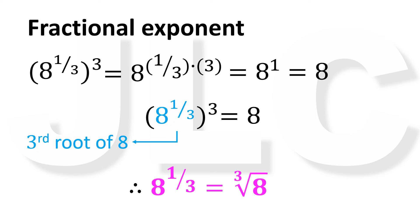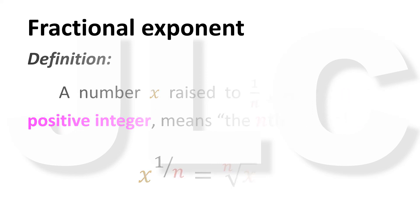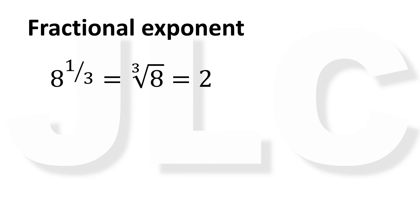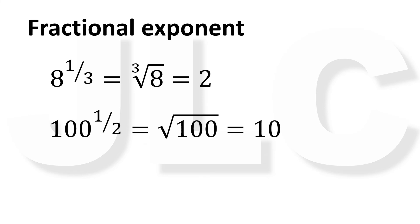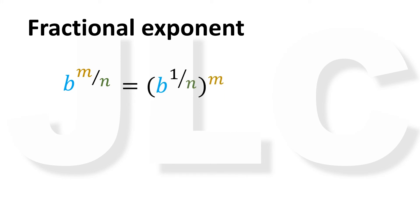This leads us to the following definition: a number x raised to 1 over n, where n is a positive integer, means the nth root of x. For example, 8 raised to 1 third equals the cube root of 8, equals 2. 100 raised to 1 half equals the square root of 100, equals 10. 16 raised to 1 fourth equals the fourth root of 16, equals 2. But what does it mean when the numerator is not 1? In general, b raised to m over n can be written as b raised to 1 over n, then raised to m, which is the nth root of b, raised to m.